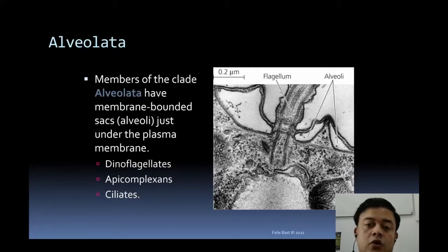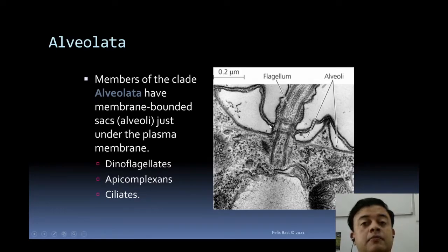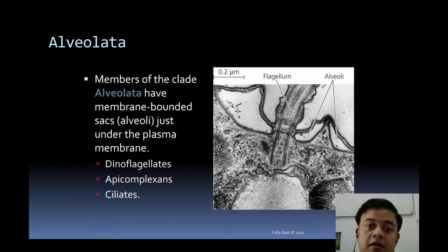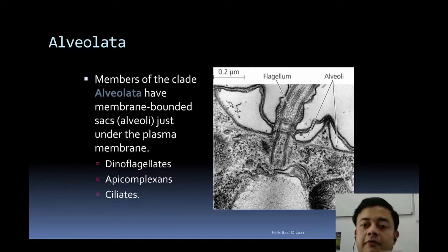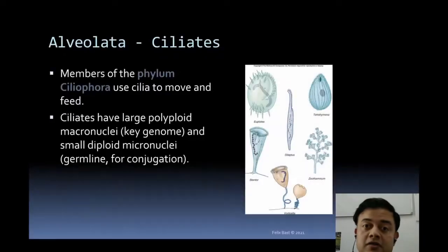Dinoflagellates, apicomplexes, and ciliates all possess these alveoli. A transmission electron microscope image shows the air-filled sacs that enable them to float, as they are planktonic organisms. These air-filled sacs increase buoyancy and enable them to float at the water surface.